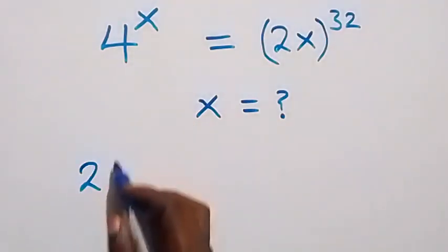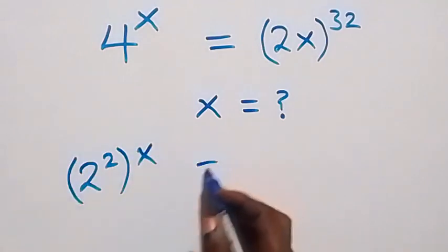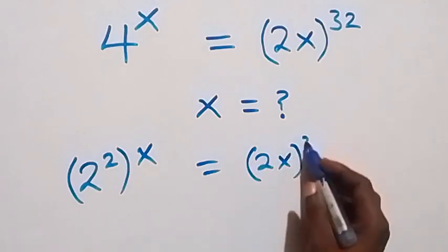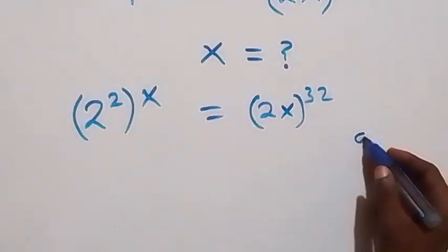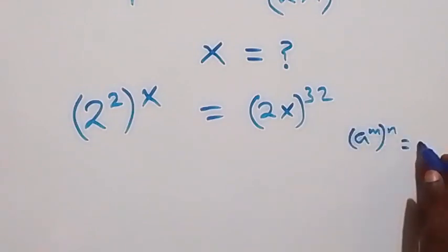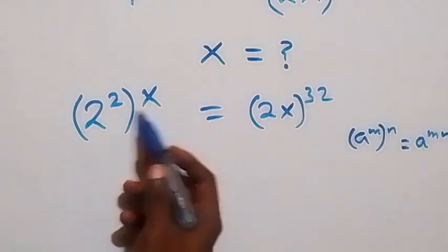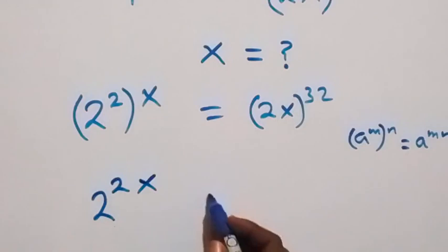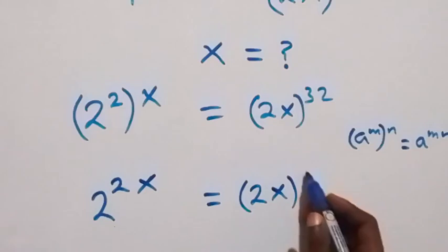Here we can write this as 2 squared raised to power x. Now equals to 2x raised to power 32. From the law of indices, a raised to power m raised to power n is the same as a raised to power m times n — that is, we can multiply the powers. Then we have 2 raised to power 2x, now equals to 2x raised to power 32.